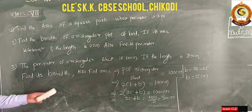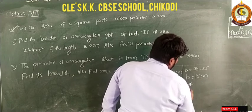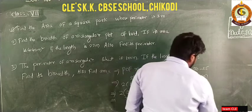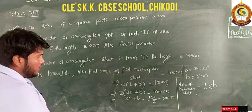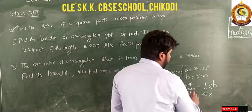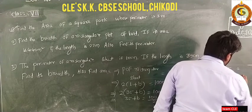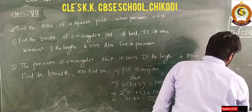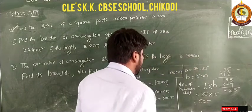Breadth is 15 centimeters. They also asked to find the area of the rectangular sheet. Area of rectangular sheet equals length into breadth. Length is 35 centimeters and breadth we calculated as 15 centimeters. So 35 into 15: five fives are 25, five threes are 15, giving 75; then one five is 5, one three is 3, giving 35 — add together to get 525 centimeter square.